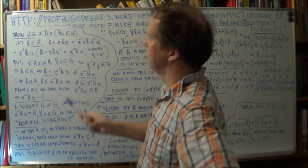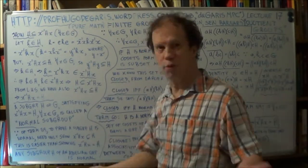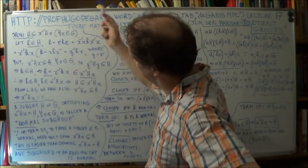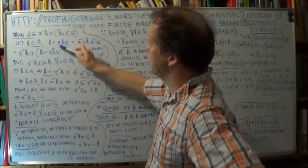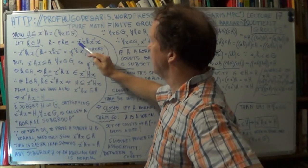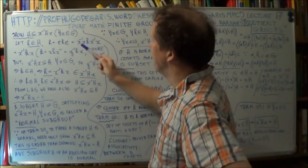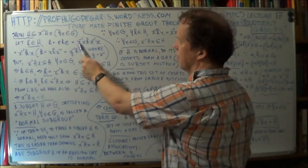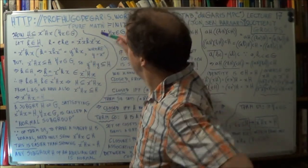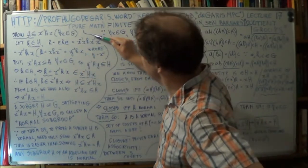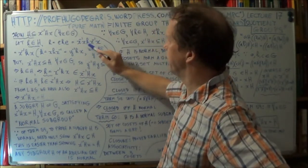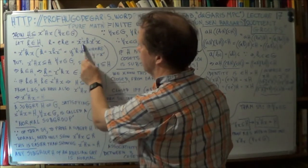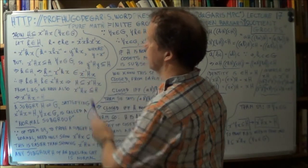Now, h is just e·h·e — same value. And then expand your e in the form of x inverse x, which is obviously e. So x is just any element of your group G. You've now got x inverse · x · h · x inverse · x. The reason you do that with this trick is you look at these middle three and label that k. So k is just x · h · x inverse.